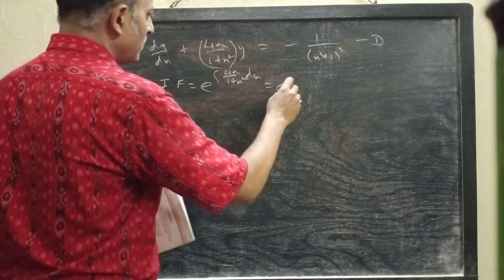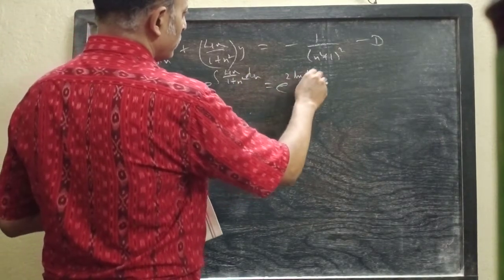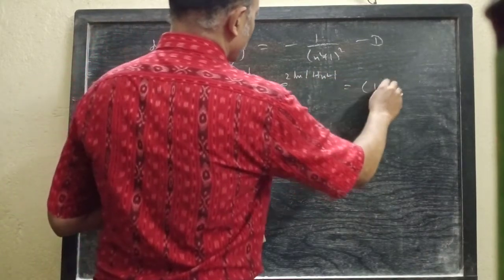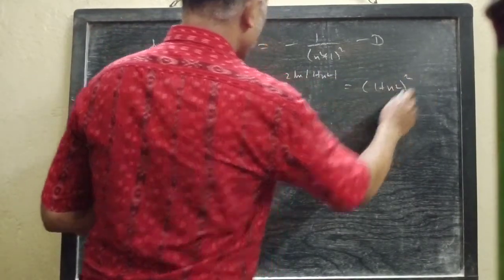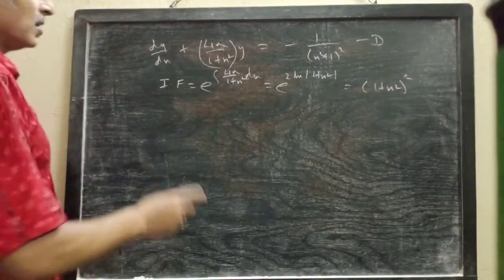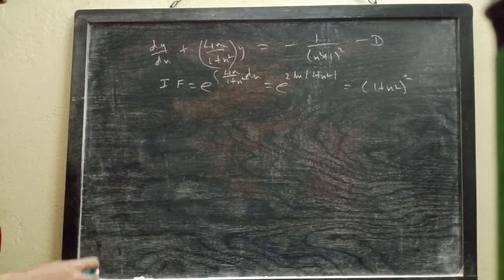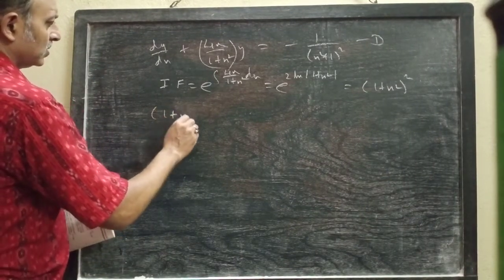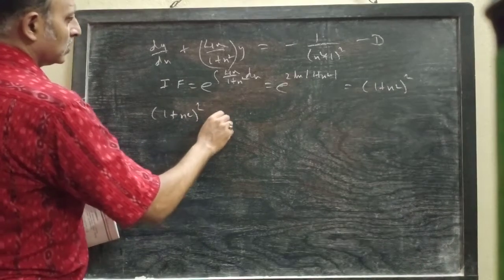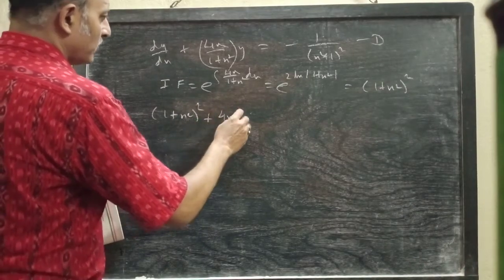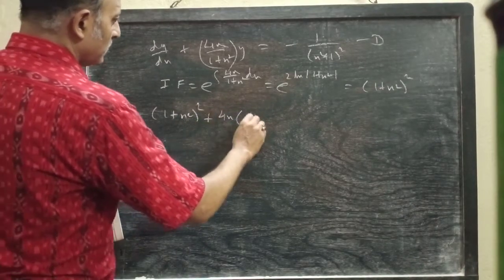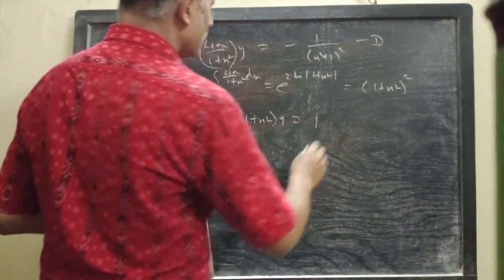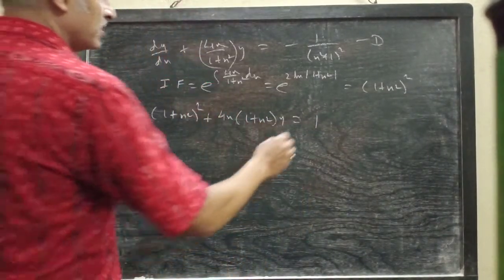This will be e to the power of 2 ln|1 + x²|, which equals (1 + x²)². Now multiplying both sides of equation (1) by (1 + x²)², we get (1 + x²)² dy/dx + 4x(1 + x²)y. Here the right side becomes -1.